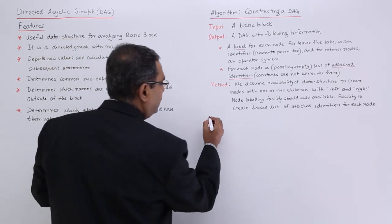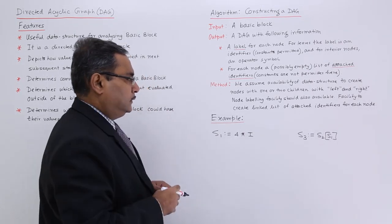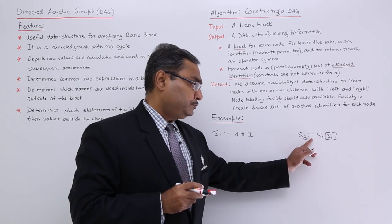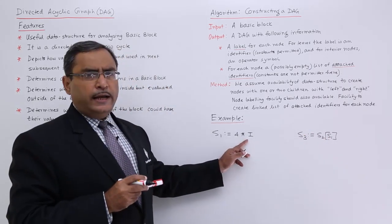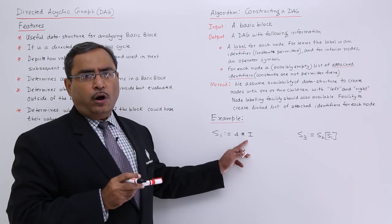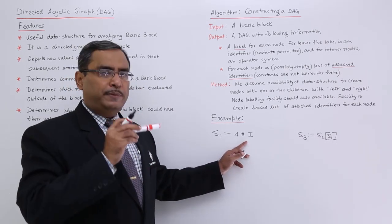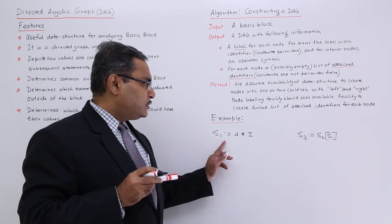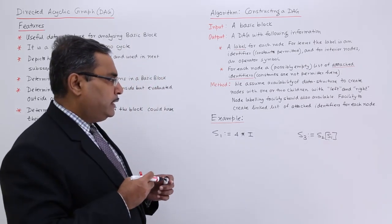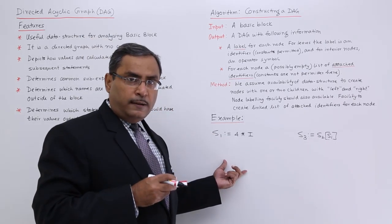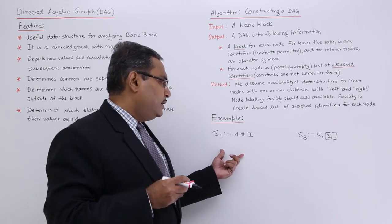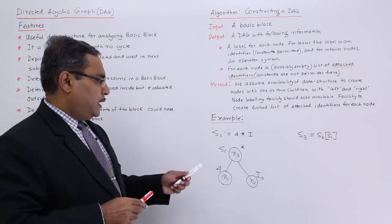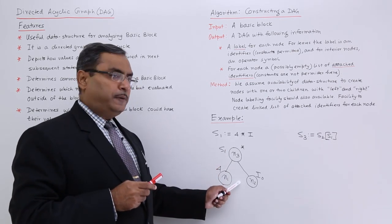Let us go for an example. Suppose we are having two statements: S1 := 4 * i, and S3 := S2 - S1. Let us suppose this i has not been defined within the basic block — it has its initialization outside of the basic block. So i is defined outside. Intentionally I have used S1 in the next statement, so S1 is common. Now let us see how to draw the DAG for these statements. For this three-address code I have drawn this particular DAG.